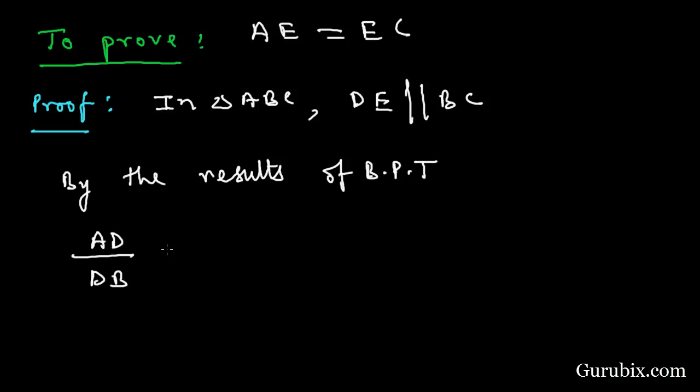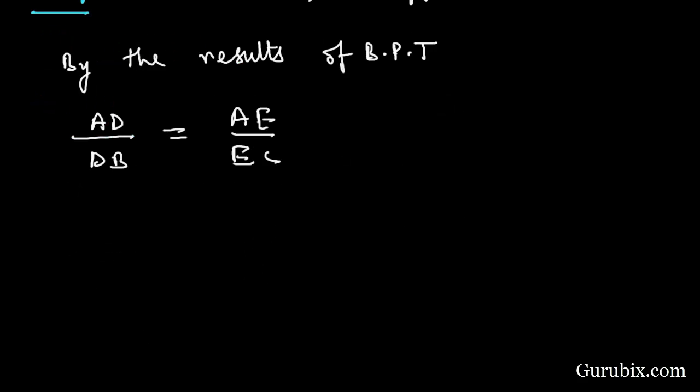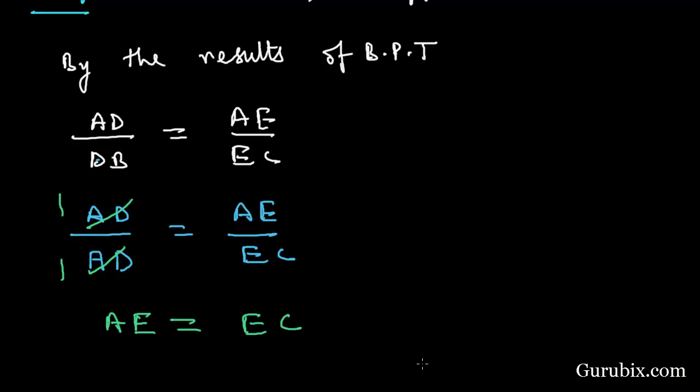But AD equals DB. Therefore, we can write AD in place of DB, and here we have AE over EC. We can cancel it out, then it becomes 1 over 1. We can cross multiply, and it becomes AE equals EC.